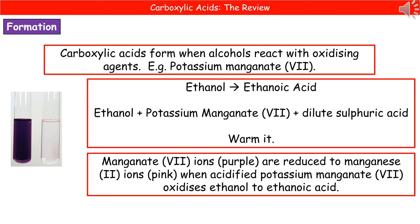What we then see is a color change. Manganate 7 ions are purple in color, as shown on the left. In this reaction they are reduced to manganese 2 ions, which are pink. So we get that visual representation of the reaction through the change in our manganate ions, while the part we can't see is the oxidation of our ethanol to ethanoic acid.